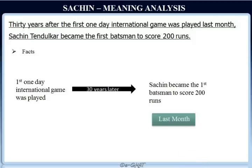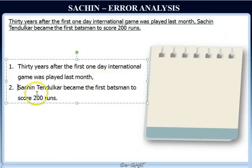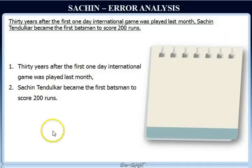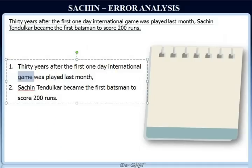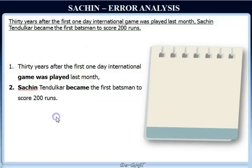We will get into the details in our next step when we do the error analysis. First, let's split our sentence into its individual clauses: '30 years after the first one-day international game was played last month,' — then we see a comma — 'Sachin Tendulkar became the first batsman to score 200 runs.' This sentence has two clauses. The first one-day international game was played, and then Sachin became — so we have our subject-verb pairs accounted for.